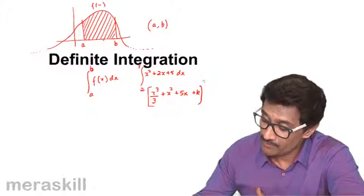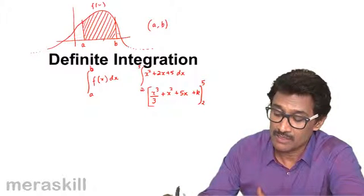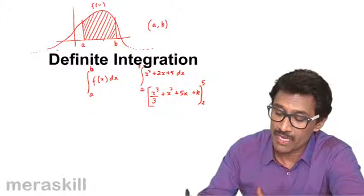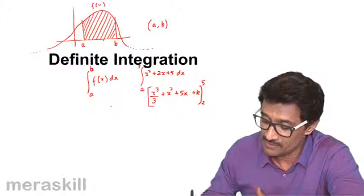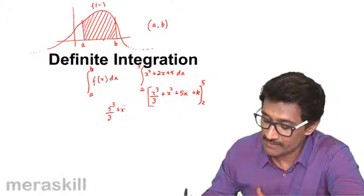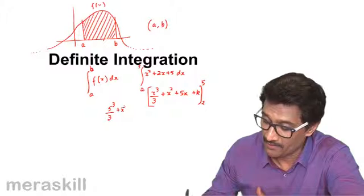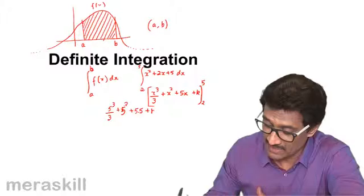Now you are going to find it from 5 to 2. So this means that you are going to cover this much minus this much will give you this area. So it's going to be the value of this, that is 5 cubed by 3 plus 5 square plus 5 into 5 plus K.